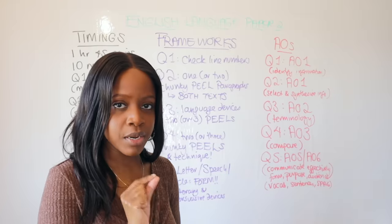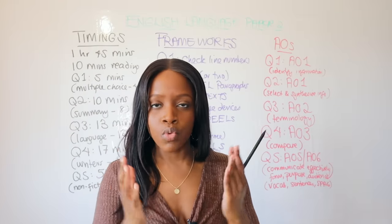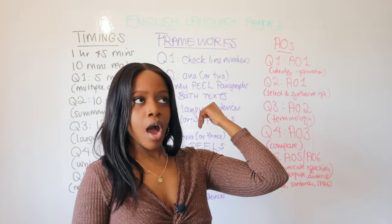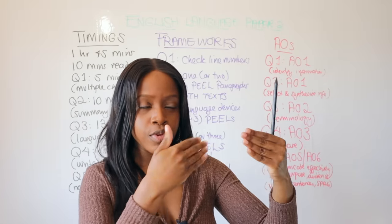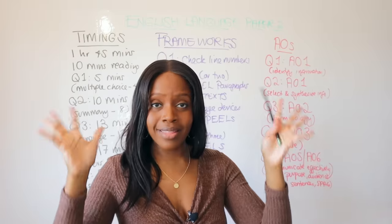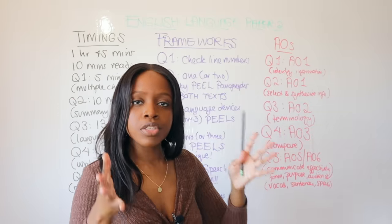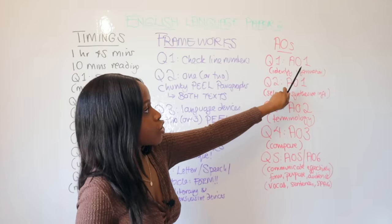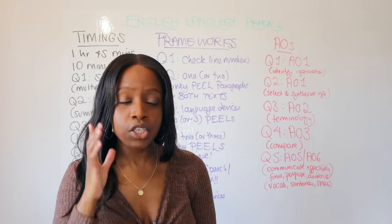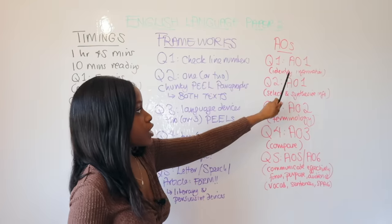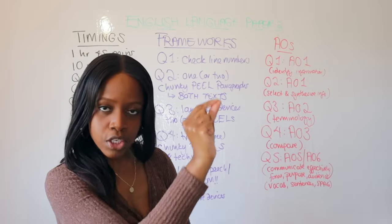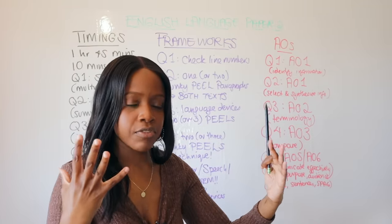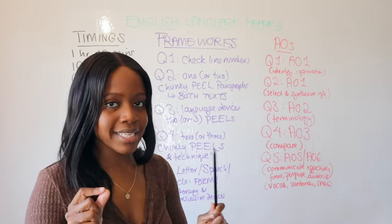Now let's cover the assessment objectives — this is the aim of the game. Examiners read your script looking for AO1 through AO6. Question One tests AO1: your ability to find and identify relevant information and select the four correct statements from the given line numbers. That's all AO1 requires at this level.